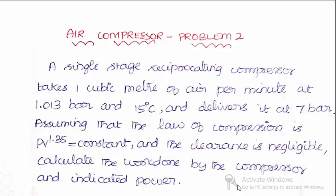Air compressed at the inlet is 1.013 bar and the initial temperature is 15 degree Celsius. Pressure of the air after getting compressed is 7 bar. Polytropic process takes place with the index of 1.35. Clearance is negligible, so Va will be equal to V1.